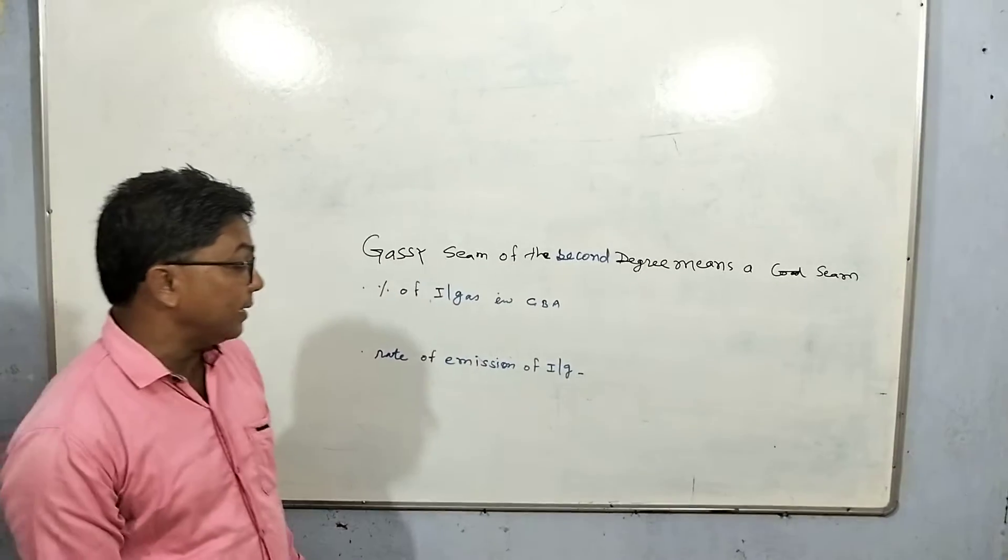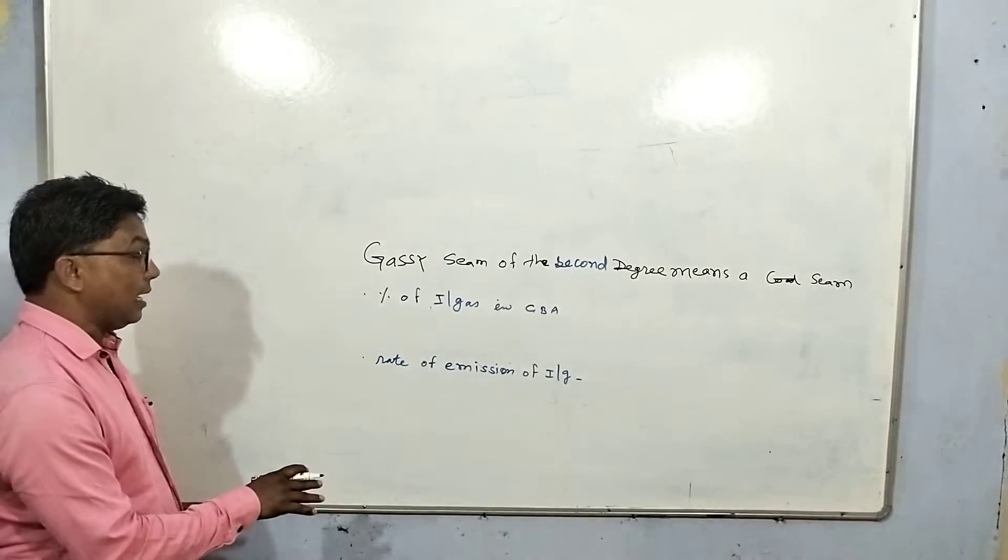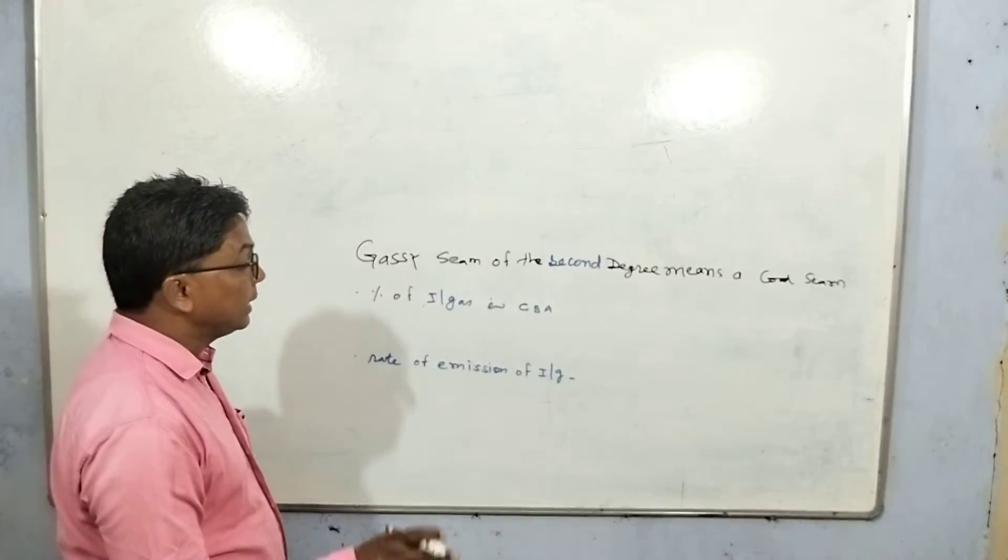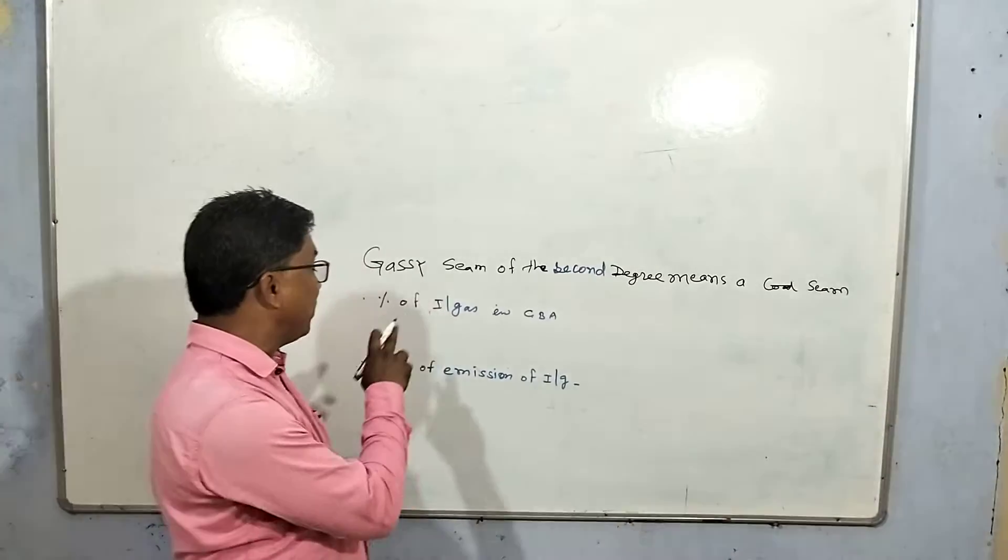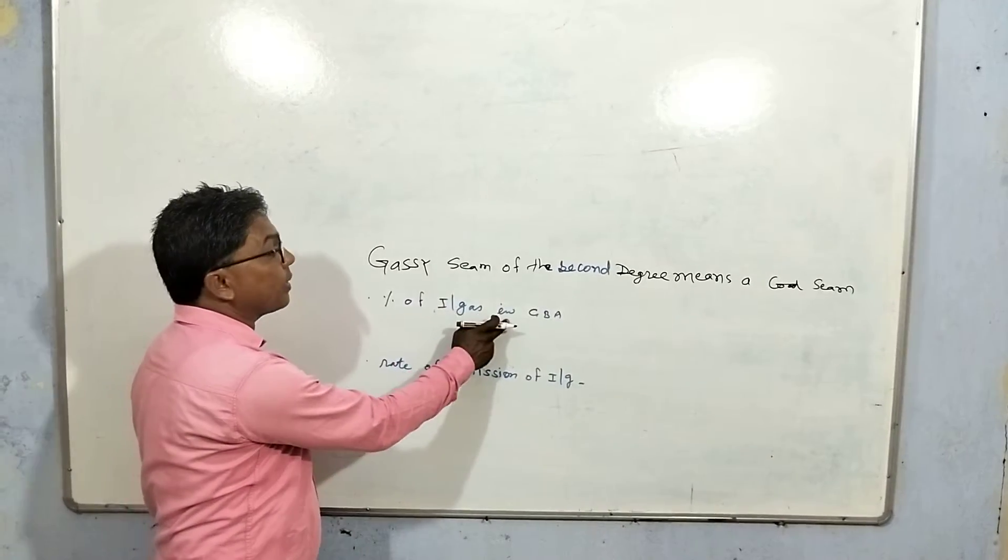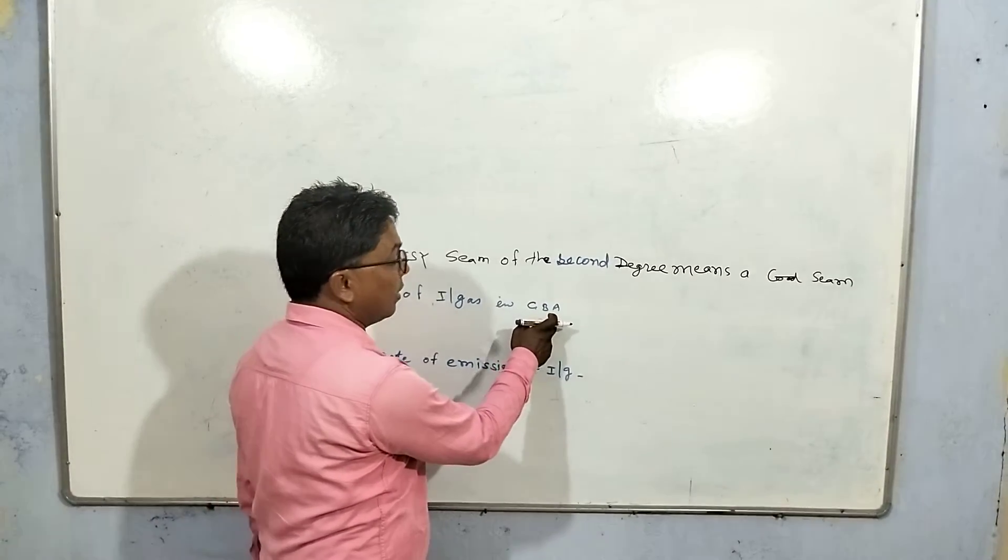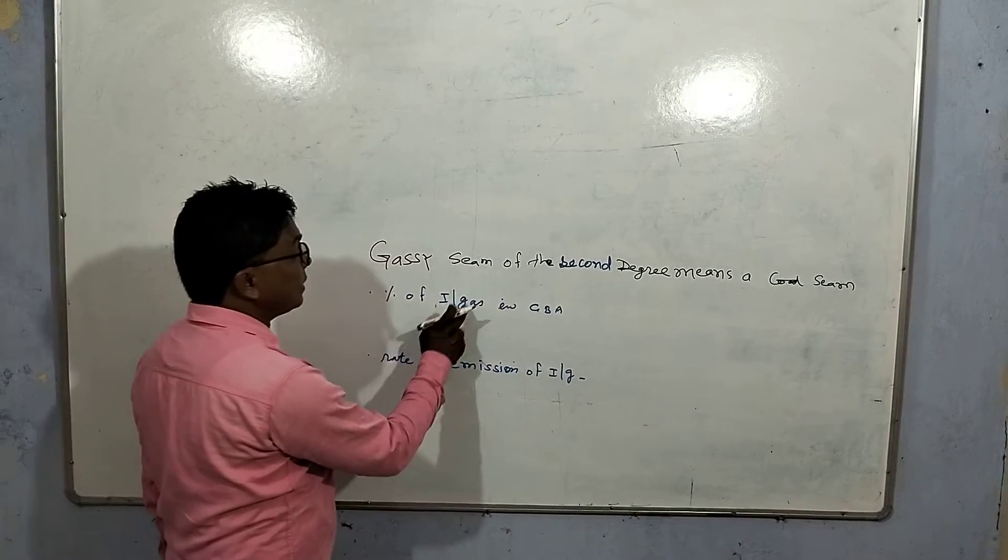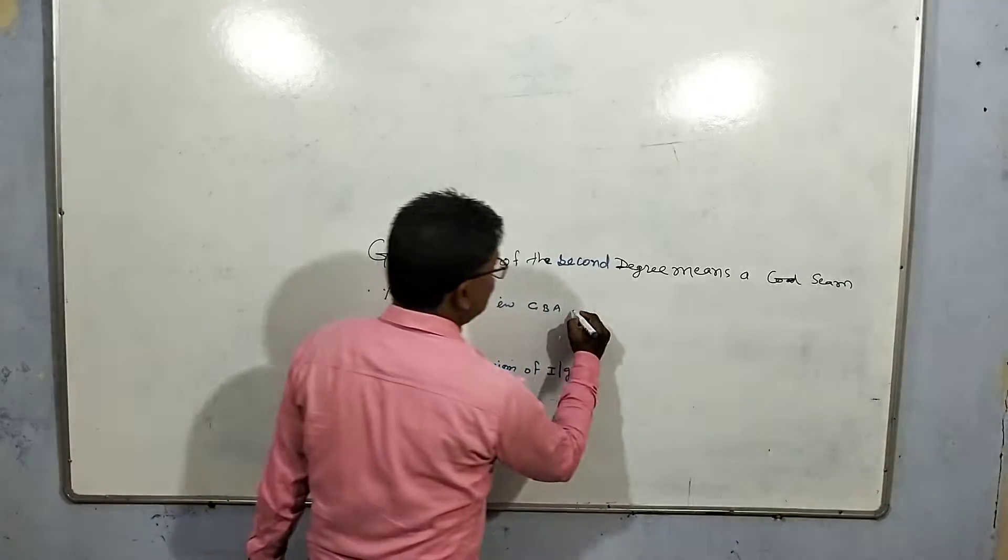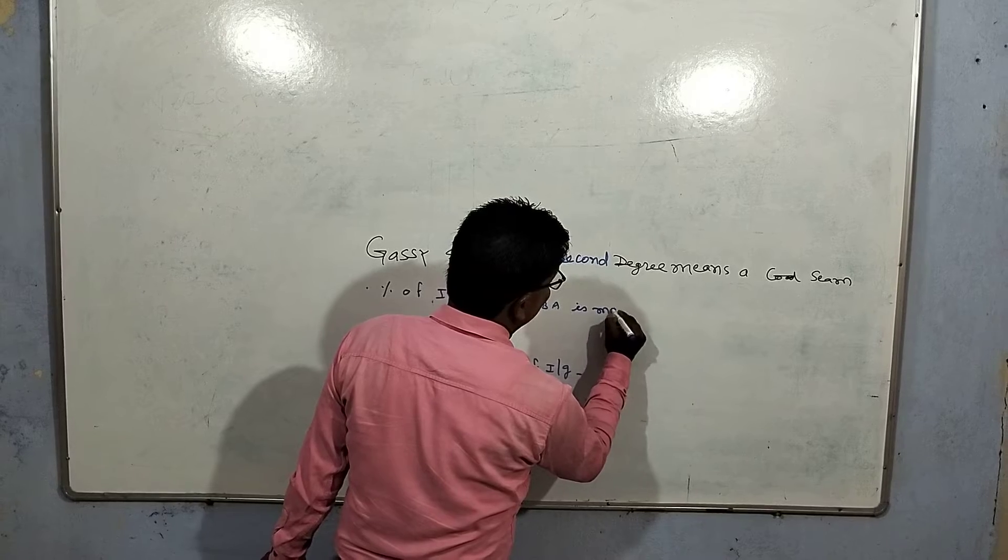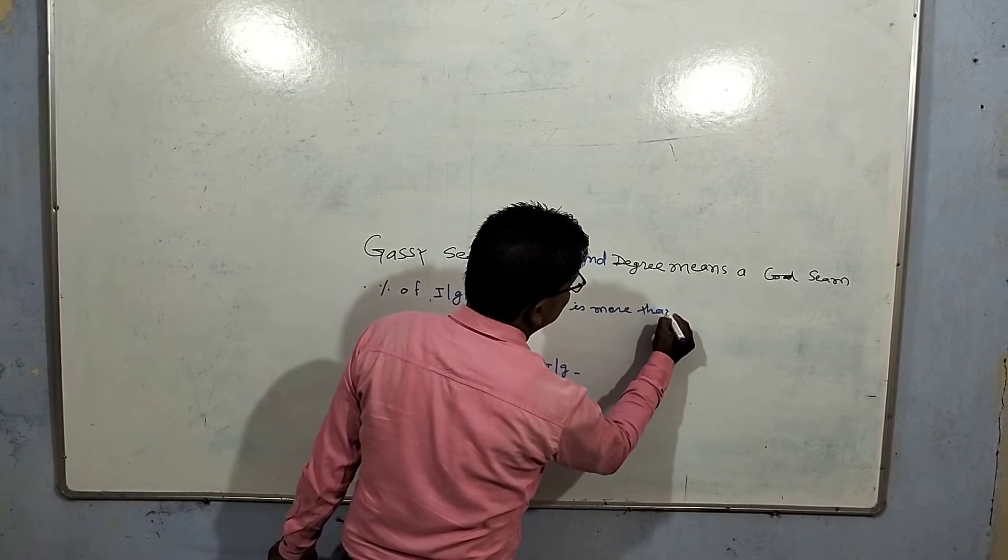There are two criteria to define degree 2 gassy seam. Number one is percentage of influx gas in the general body of air. Percentage of influx gas is more than 0.1.